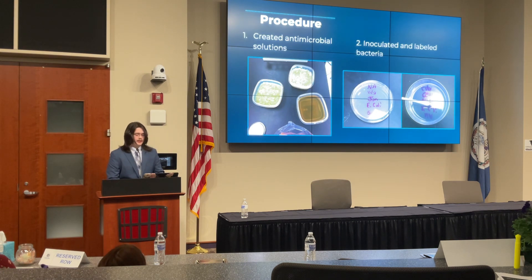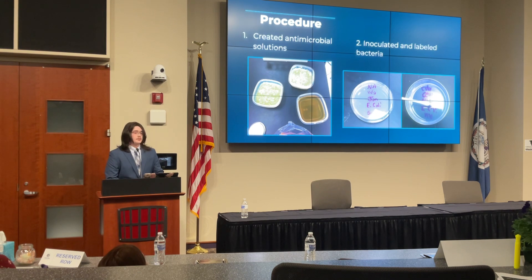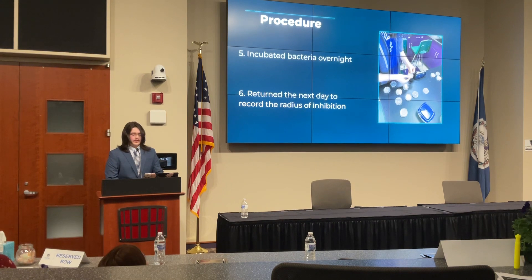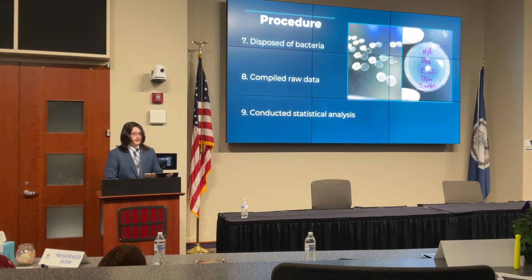For my procedure, I began by creating antimicrobial solutions by grinding the antimicrobials with a mortar and pestle and adding equal parts water. I then inoculated my bacteria, added them to the agar plates with sterile cotton swabs, and labeled petri dishes according to their individual treatment groups. I then performed a disc diffusion test by dipping small paper discs in the antimicrobial solutions before adding them to the agar plates, and added the positive and negative control groups as well. After properly creating the test groups, I left them in an incubator at 37 degrees Celsius for 24 hours, returned the next day to observe and record my results, disposed of the bacteria by spraying bleach into the agar plates, and finally compiled my raw data and conducted my statistical analysis.